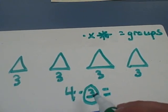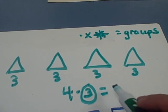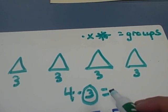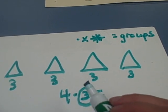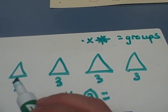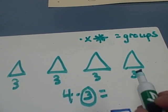Four times three. Well, I could do counting by threes: three, six, nine, twelve.